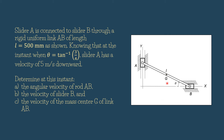This is the diagram. We have slider A, slider B, and the rod link AB. Slider A is moving downward with a constant velocity of 5 meters per second. Because of the motion of slider A, slider B will move to the right. Both sliders A and B have pure translational motion — A is moving downward, B is moving to the right. The rod link AB will undergo what we call general plane motion, which is a combination of translational and rotational motion. When A is going down and B is going to the right, the angle theta is getting smaller, so we have rotation of the link AB.